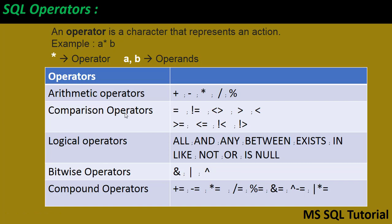Next, logical operators: ALL, AND, ANY, BETWEEN, EXISTS, IN, LIKE, NOT, OR, and IS NULL. These are all the logical operators we are going to use in SQL.